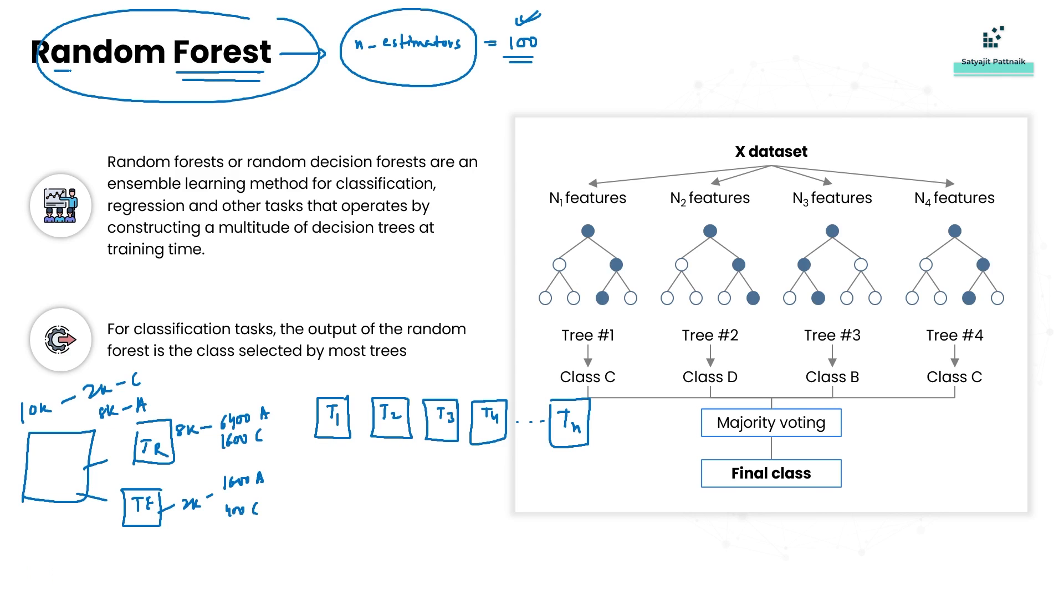What is random here? So what happens is whenever these decision trees are created, randomly data points are being passed for training, which means if your training data is 8,000, all the 8,000 records will not go into all the trees. Let's say 2,000 records go here, 1,500 goes here, 1,200 goes here, 5,000 goes here, 2,000 goes here. So the data points that go into multiple trees are random in nature - that is the first randomness behavior.